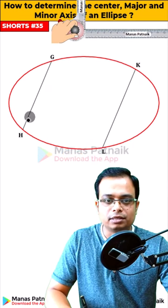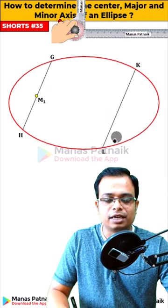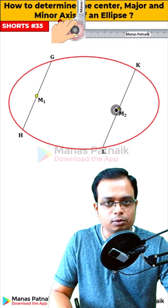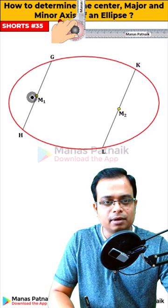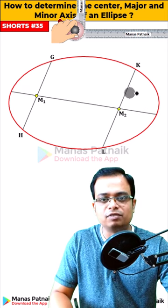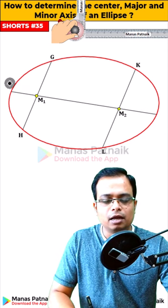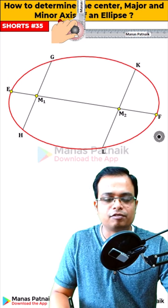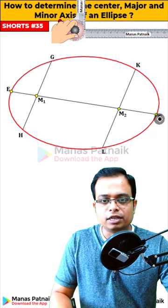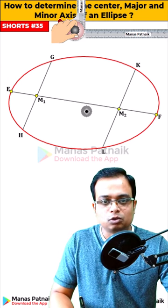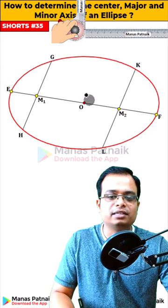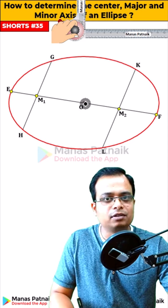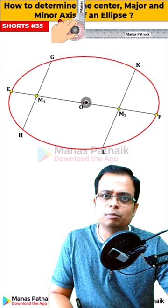Locate the center of GH as M1 and that of KL as M2. Join M1 and M2 and extend them until they reach the periphery of the ellipse — let's mark these as EF. The center of EF, that is O, qualifies as the center of the ellipse.